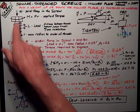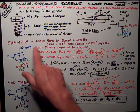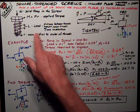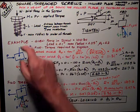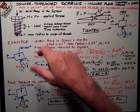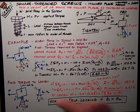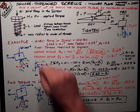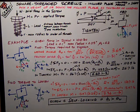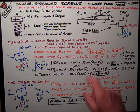L is the lead, the distance between two threads. It's the amount that the screw travels if you turn it one revolution. It travels into whatever it's being screwed into that lead distance when you turn it one revolution.